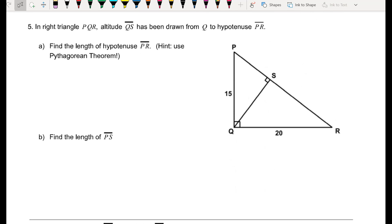Number 5. In right triangle PQR, altitude QS has been drawn from Q to hypotenuse PR. So I'm already thinking this might be one of those geometric mean problems, because I see this altitude QS in the right triangle. Find the length of hypotenuse PR. And it says, hint, use the Pythagorean theorem. Because if you look at the whole big right triangle, I actually have two of the sides already. I could use the Pythagorean theorem, which says if I take a leg, square it, add it to the other leg, square it, that should be equal to the hypotenuse squared.